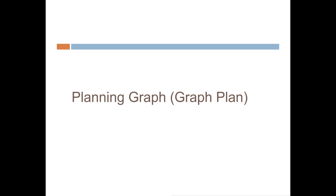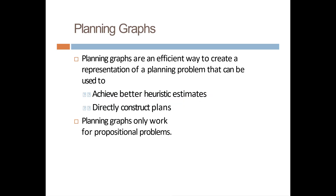Hello students, welcome back. In today's lecture we are going to see one of the algorithms for classical planning — that is Planning Graph, or we can call it Graph Plan. It is one of the approaches or algorithms in classical planning. Planning graphs are an efficient way to create a representation of a planning problem that can be used to achieve better heuristic estimates or directly construct the plans.